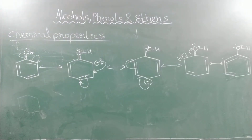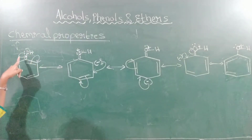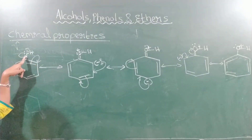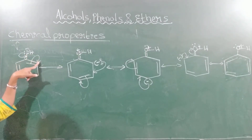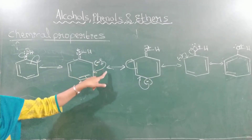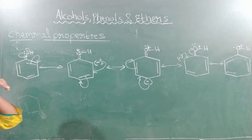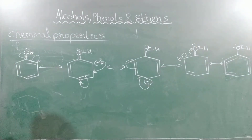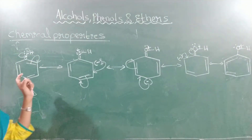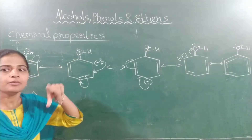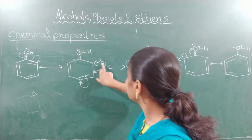Here I have completed writing the resonance structures of phenol. First, the lone pair of electrons of oxygen shifts to this bond, and this pi bond shifts to this carbon atom; a negative charge is formed and delocalized all over the ring. By these five resonating structures, you can observe: there is a positive and negative charge separation — here positive charge and here negative charge.